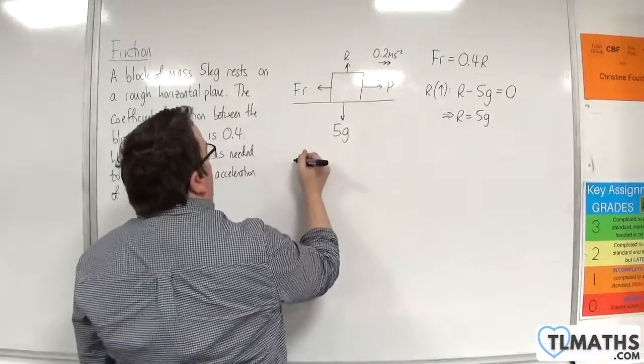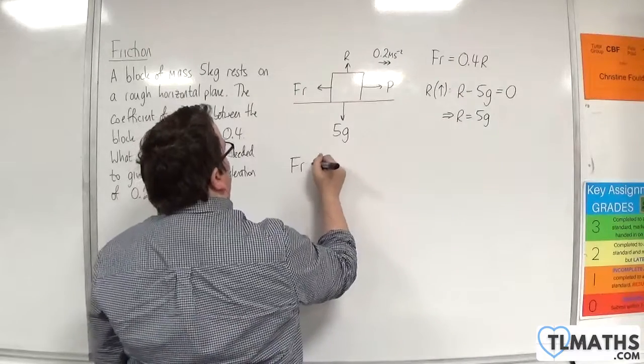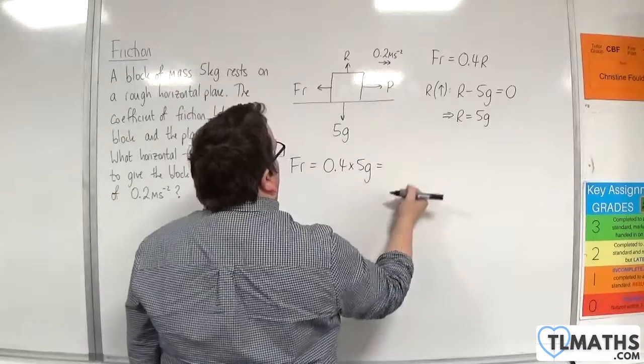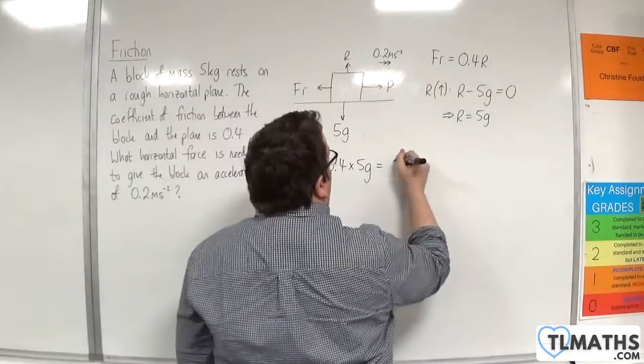So the friction must be equal to 0.4 times 5g. Now that would be equal to 2g.